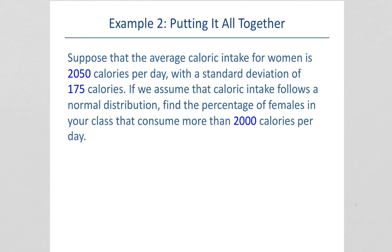We first need to find the z-score. 2,000 minus our mean, which was 2,050, divide by the standard deviation of 175, and we get negative 0.29.